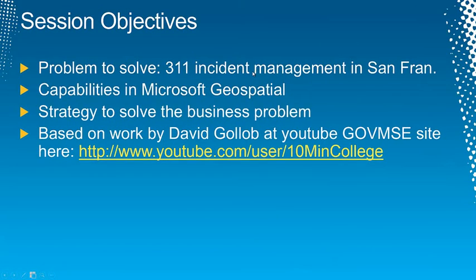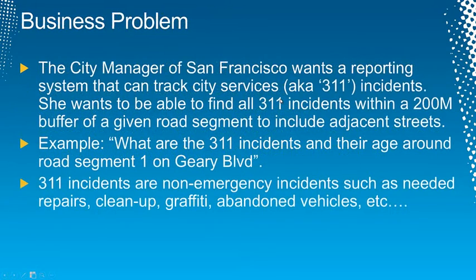The problem we want to solve today is this 311 incident management problem for San Francisco. We want to look at the capabilities of the Microsoft geospatial platform and figure out a strategy to solve the business problem. The city manager of San Francisco wants a reporting system that can track city services incidents — these are 311 incidents. She wants to find all the 311 incidents within a 200 meter buffer of a given road segment, which would include adjacent streets.